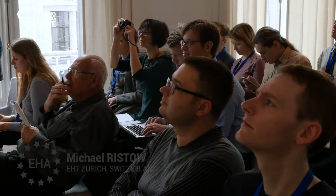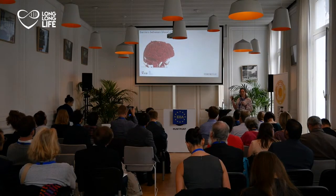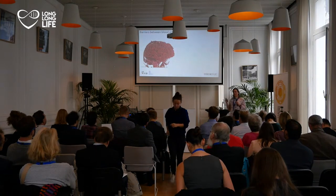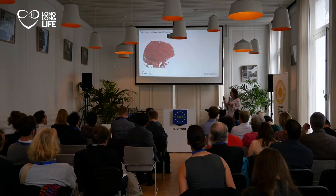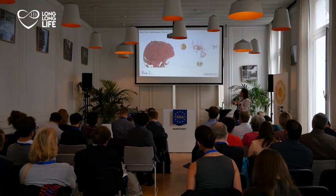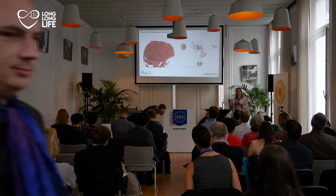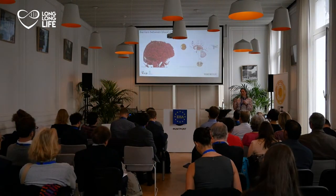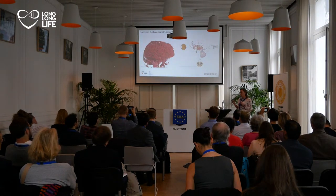If you look at the brain, you have all these capillaries. However, it's very dangerous if blood would leak into the brain. To prevent this, there is the blood-brain barrier, which is located at the border between the capillaries and the brain and is formed by endothelial cells. These endothelial cells have tight junctions, which prevents free leakage from the blood into the brain.